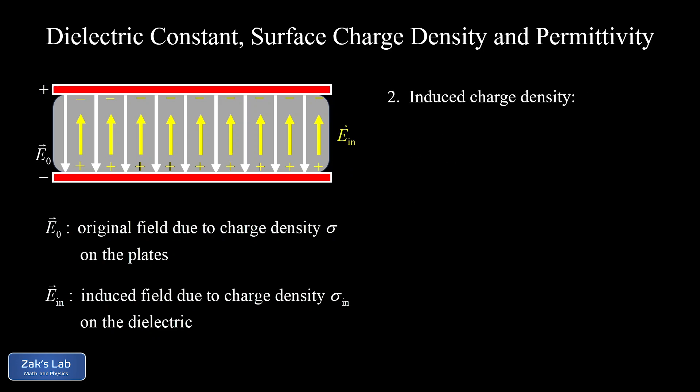Second, we want to actually calculate the induced charge density on the surface of that insulating material. As a reminder, we have a surface charge density on the conducting plates of plus sigma at the top and minus sigma at the bottom, and our induced charges are plus sigma_induced at the bottom and minus sigma_induced at the top. We're after an expression for the induced surface charge in terms of the original surface charge on the conducting plates.